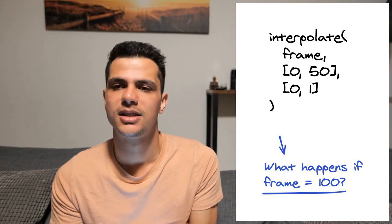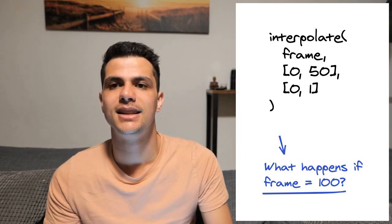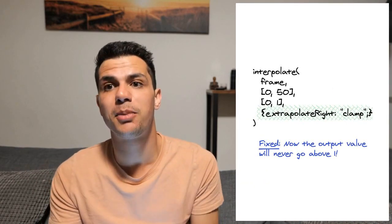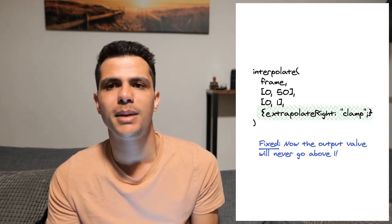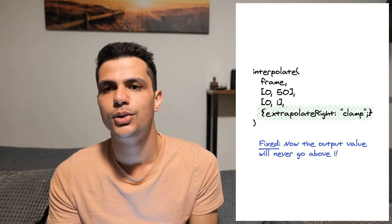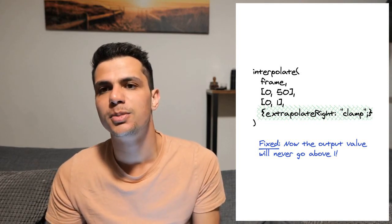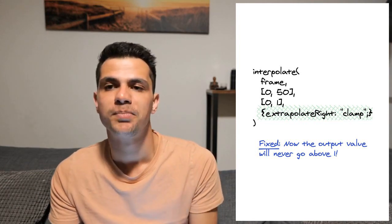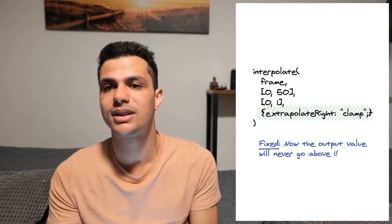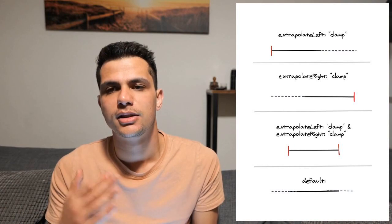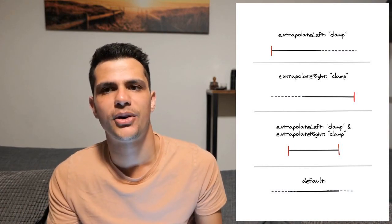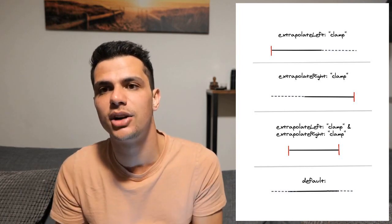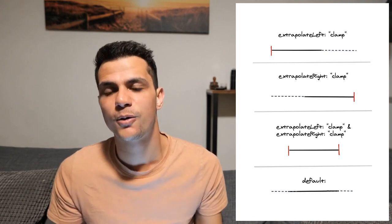To solve this problem, you can pass a fourth argument to the interpolate function — an object where you say extrapolate right clamp. This ensures the output value will be at most the maximum value of the output range you specified. There's also extrapolate left, so you can clamp on both sides. You can use either extrapolate left clamp or extrapolate right clamp to make one side open-ended and the other clamped. By default, both sides are open-ended.